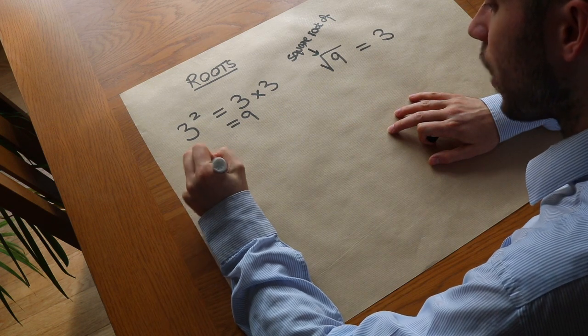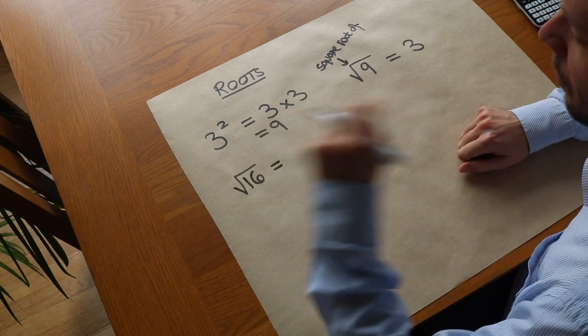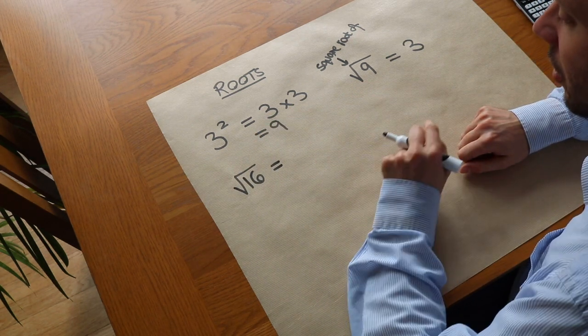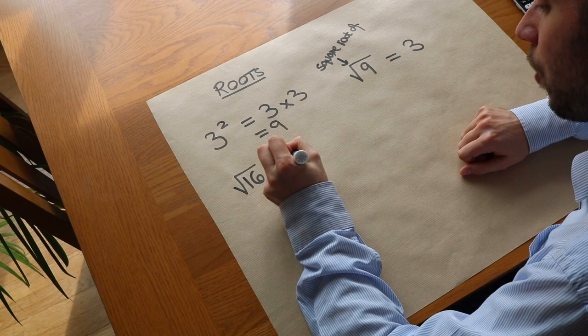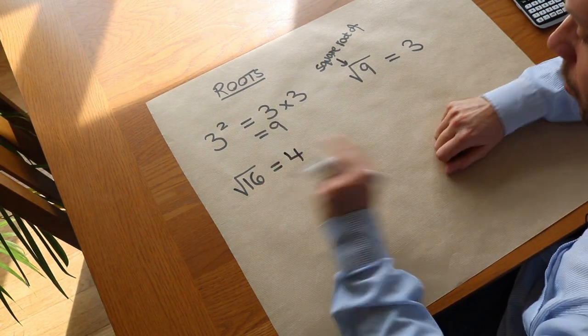If I had the square root of 16, that asks what number squared, what number multiplied by itself gives you 16? Well it's 4 because 4 multiplied by itself, 4 times 4, would give you 16.